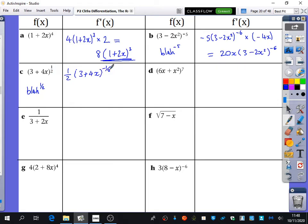Half to a minus 1. And I also need to multiply by the derivative of blah here, which is? That's just going to be 4. Good. I'm going to multiply that by 4. And 4 times 1 half is 2. So it is 2 brackets, 3 plus 4x to the minus 1 half like this.